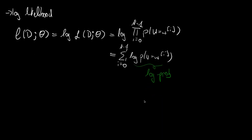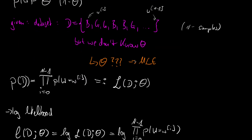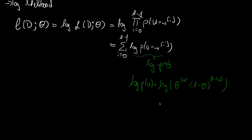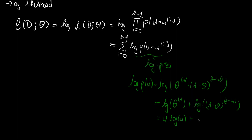The log probability is defined for our particular distribution as the logarithm of p of w. Recalling the definition of the Bernoulli, it was the logarithm of theta raised to w times one minus theta raised to one minus w. Since we have a product, we can split this into a sum: the logarithm of theta to the power of w, plus the logarithm of one minus theta raised to one minus w. And since an exponent inside a logarithm goes outside, this becomes w times the logarithm of theta, plus one minus w times the logarithm of one minus theta.